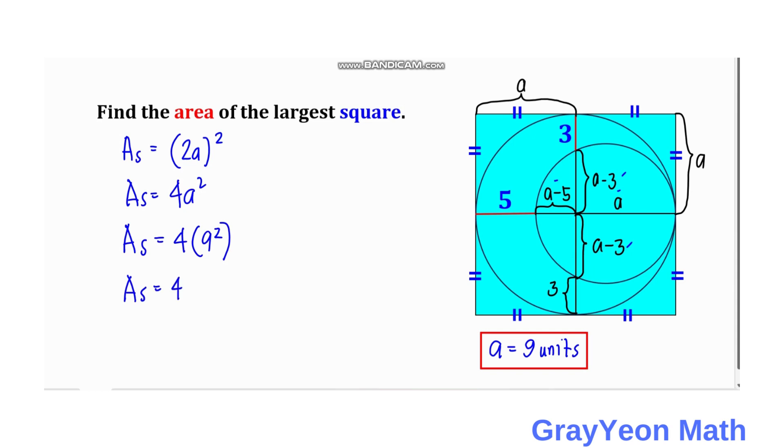4 times 81, which is 324. The area of the square is 324 square units, and that is our answer.